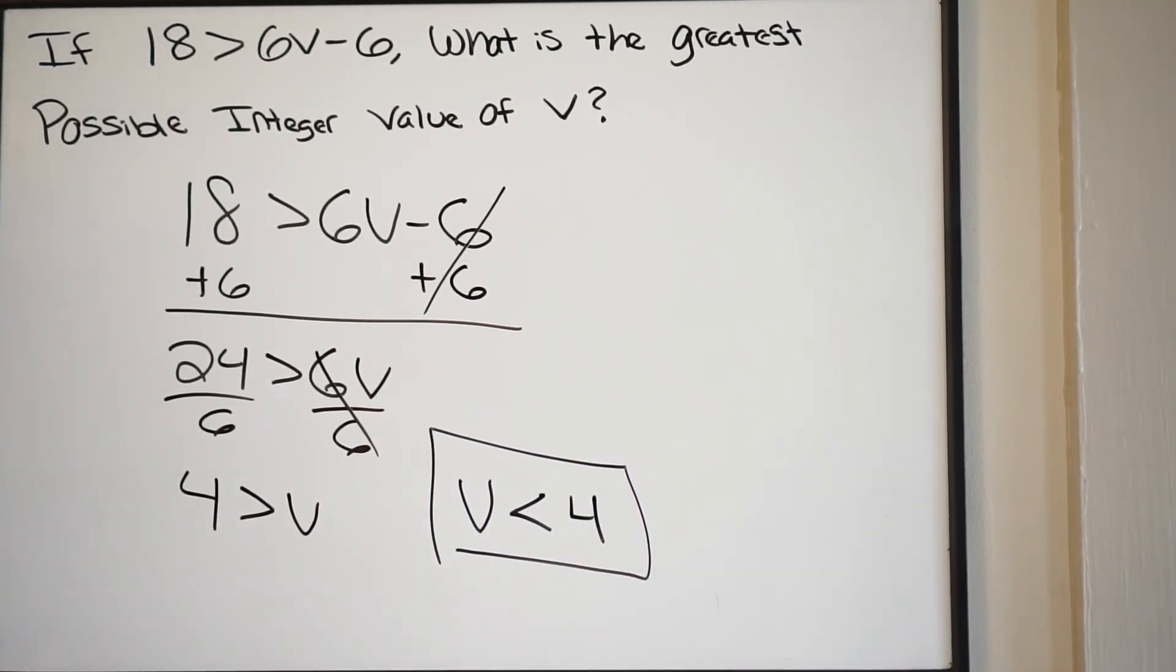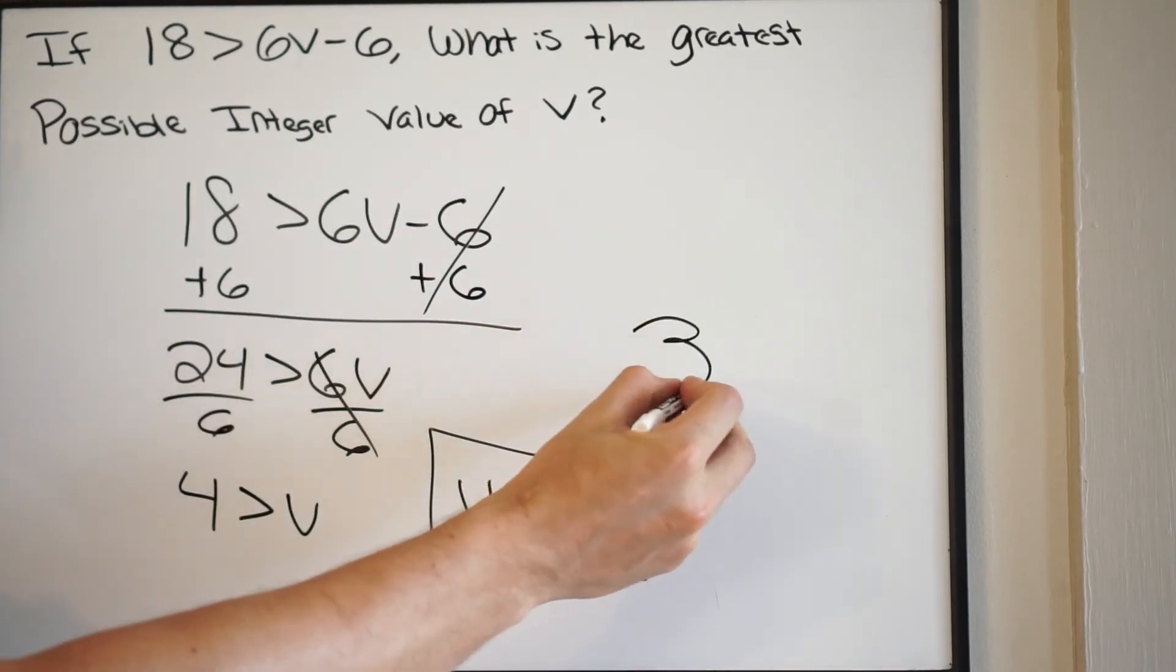So let's go back to the question. It says, what is the greatest possible integer value of v? Well, we know here that v has to be less than 4. So it can't be 4. So the next greatest possible integer value here is going to be 3. So your answer here is going to be 3.